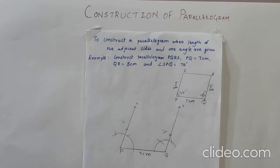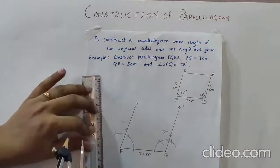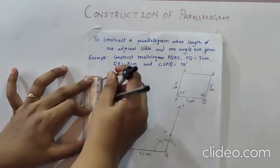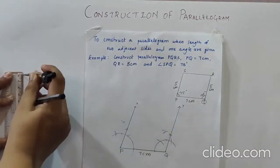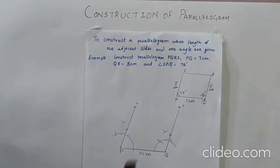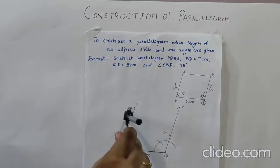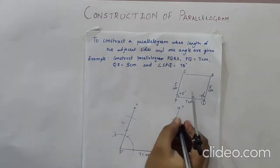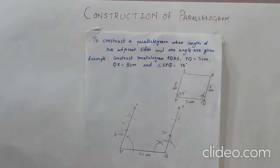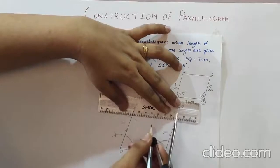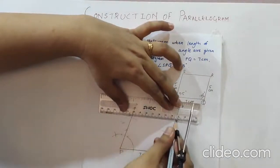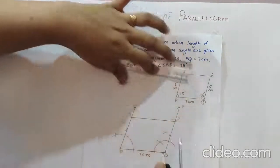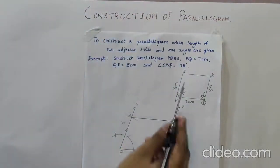Now with the help of the compass we will measure 5 cm and we will cut the arc on both the rays. Keep the center as P, cut the arc 5 cm. Over here also cut 5 cm. So these are the respective points. This is point R and this is my point S. And the last step is we have to join R and S. So this is my required parallelogram PQRS.